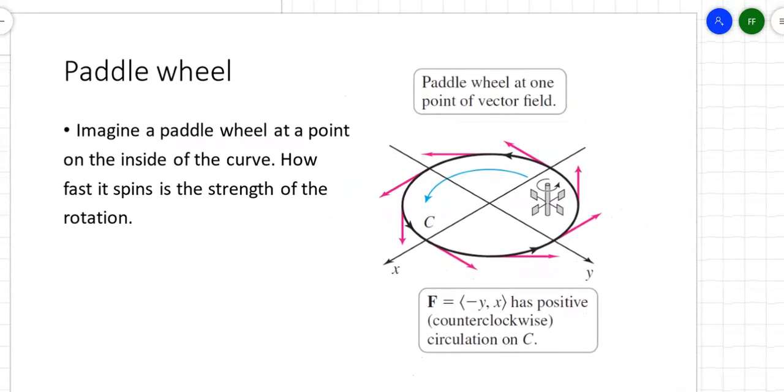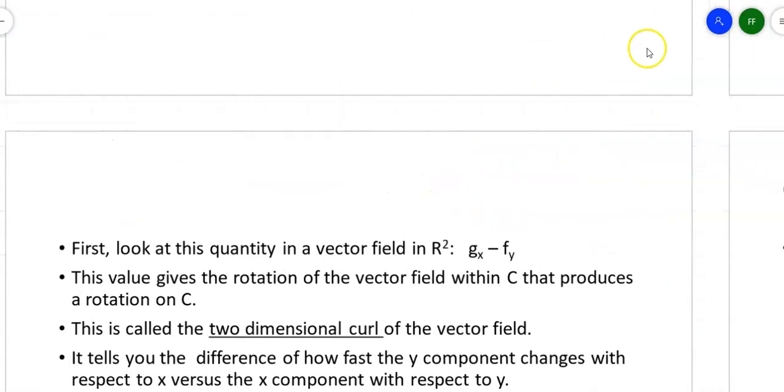The idea is to think about a paddle wheel. You've got a paddle wheel at a point inside of a curve. So the curve is oriented in a certain direction, and as the curve goes around, it's throwing off these tangent vectors. But the strength of the rotation is going to depend on how fast that little paddle wheel spins. So what do we do with this?